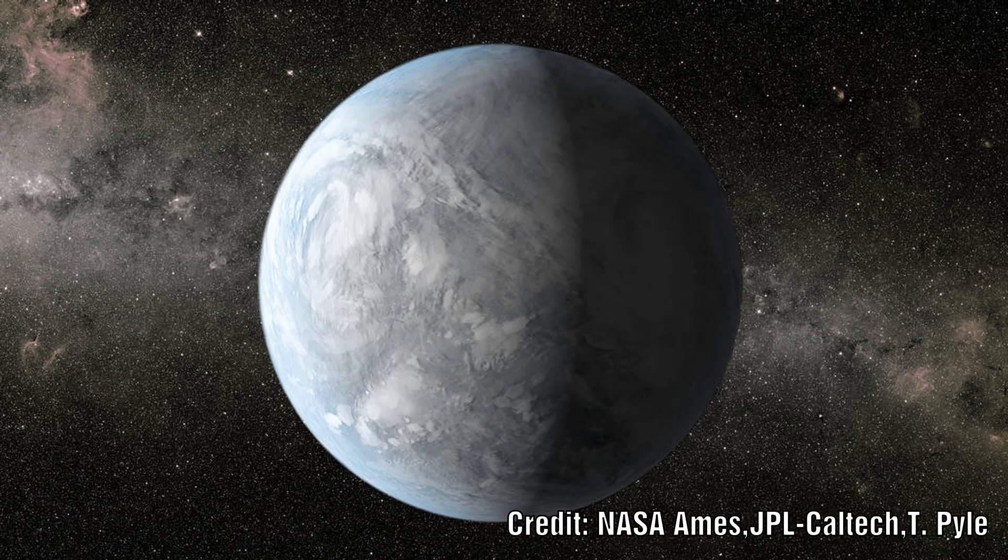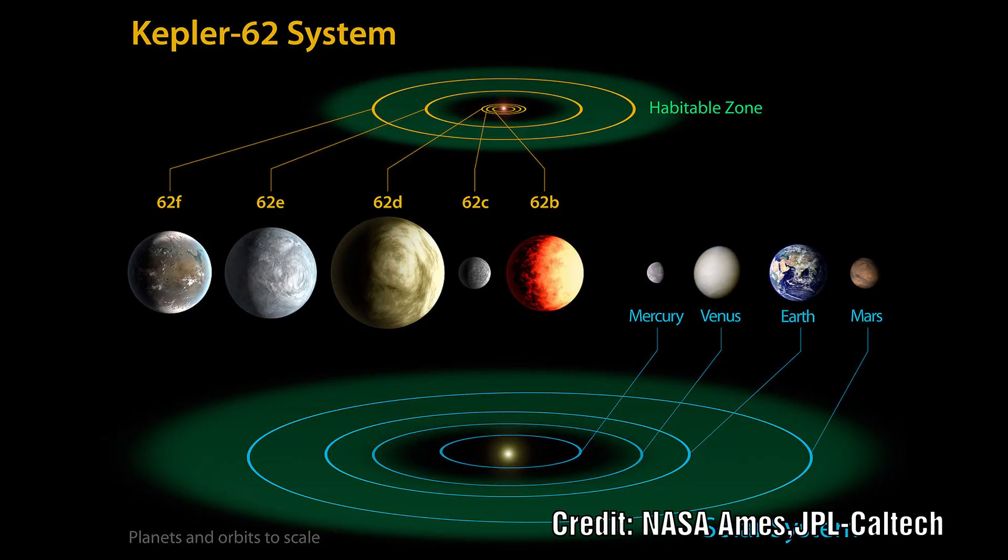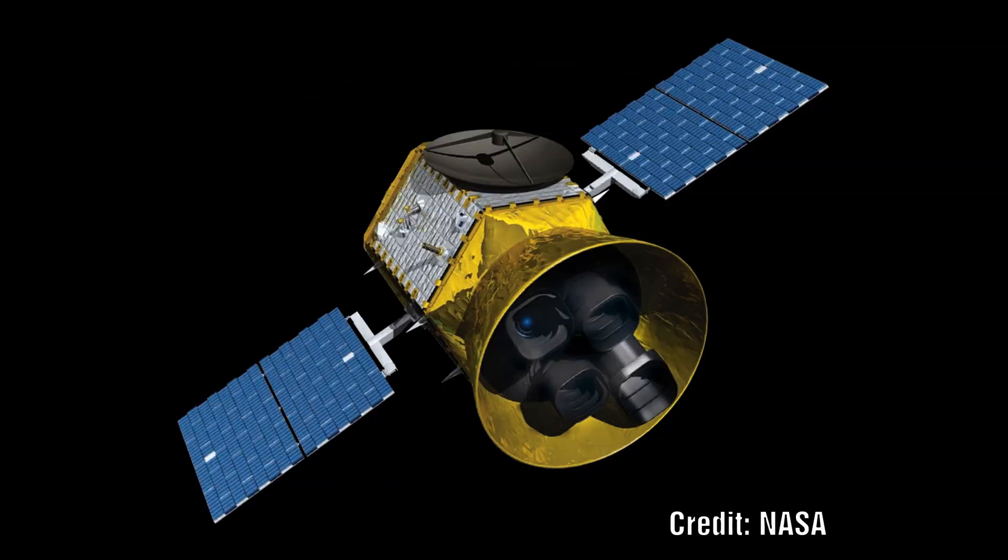It was only recently that we started discovering exoplanets surrounding other stars. Since then we have discovered over 4,000 of these exoplanets using the Transient Exoplanet Survey Satellite, TESS for short.